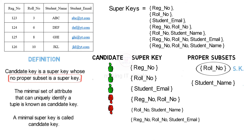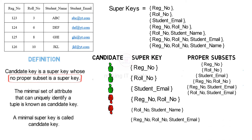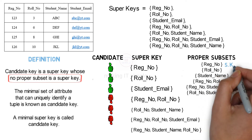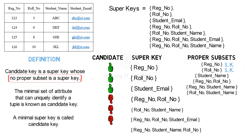Sixth, we have registration number, role number, and student email. Out of its proper subsets, registration number, role number, and student email — all three are super keys of this student table. Therefore, as per the definition, this super key is not a candidate key. The last one is registration number, student name, and role number. Out of its proper subsets, registration number and role number are both super keys of this student table. Therefore, as per the definition, this super key is not a candidate key.